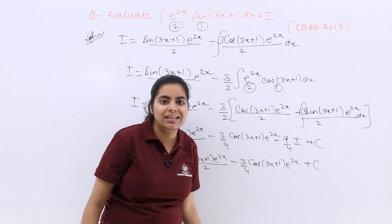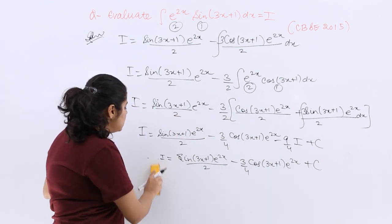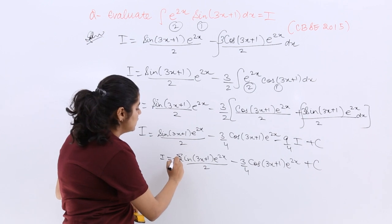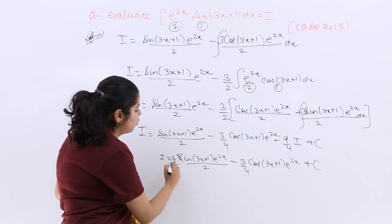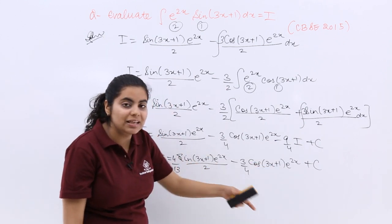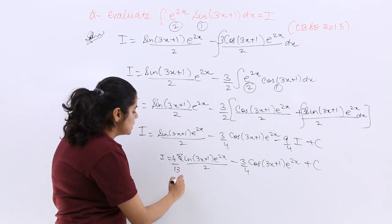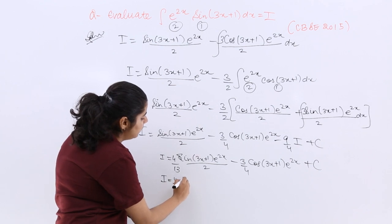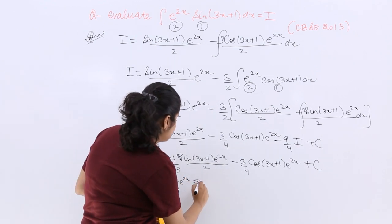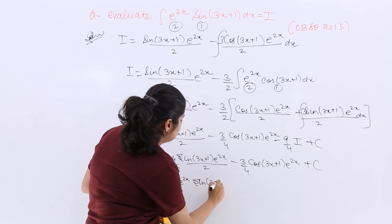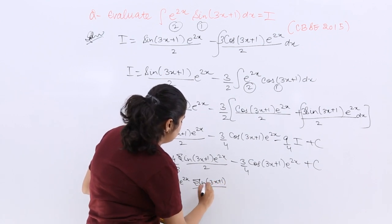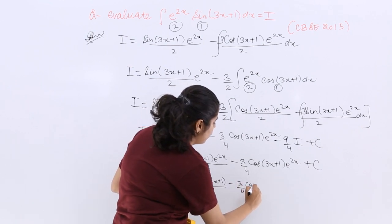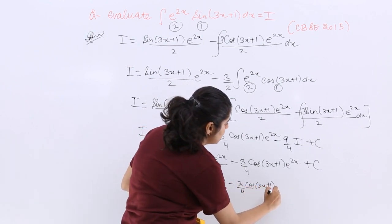Now do I need I? Yes, I do need I. So I do not need 13 by 4. Let me take 13 by 4 to the other side. So it would be 4 by 13 and e raised to the power 2x can come common from both. So I is equal to 4 by 13 multiply by e raised to the power 2x [sin(3x+1) upon 2 minus 3 by 4 cos(3x+1)] plus C.